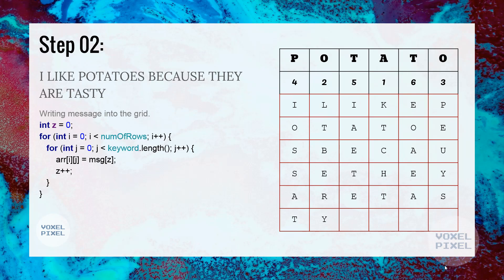As you can see, there are still empty places inside the grid. So we will add dummy characters.